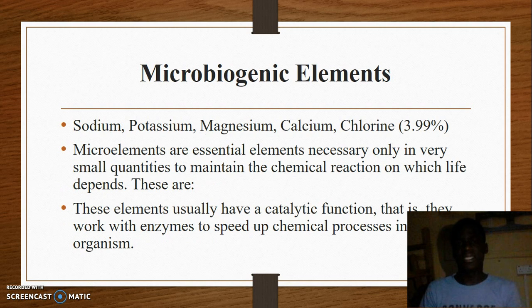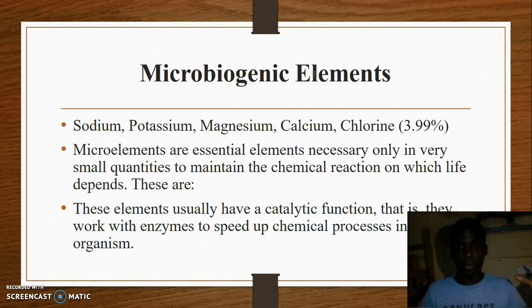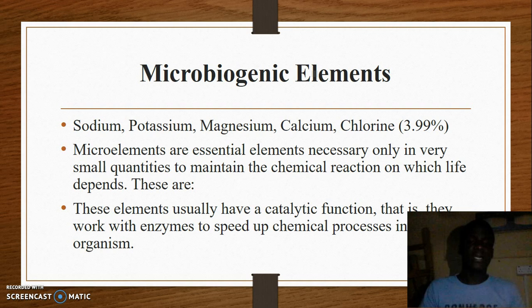Microbiogenic elements act basically as catalysts — substances that speed up chemical reactions. Examples include sodium, potassium, magnesium, calcium, and chlorine. The macrobiogenic elements form about 96% of human body weight, showing how abundant they are. Sodium and potassium also help in the transport of substances across the cell membrane.